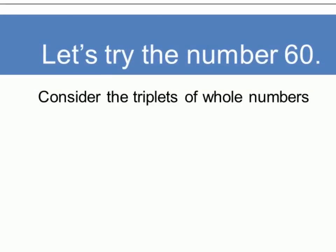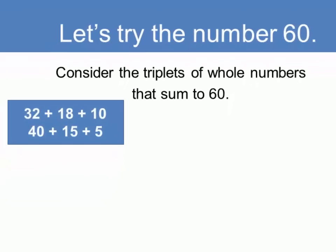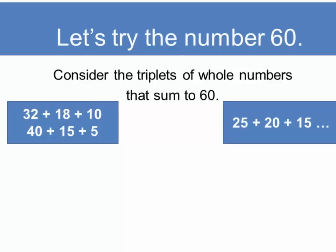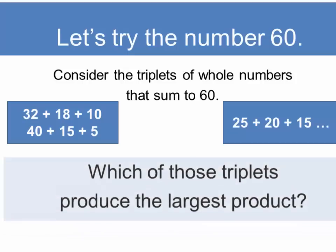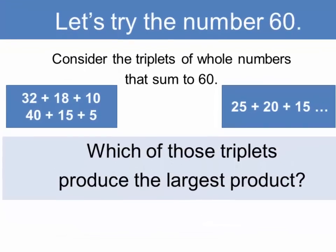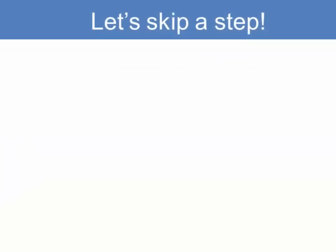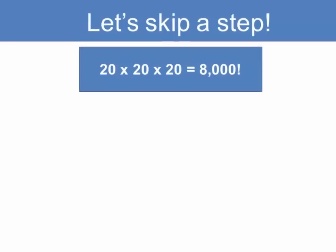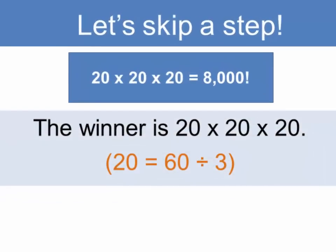Well, let's try the number 60 in something a little different. Let's consider triplets of whole numbers that sum to 60. For example, that might be 32 plus 18 plus 10, or 40 plus 15 plus 5, or 25 plus 20 plus 15. Quite a number of choices, but which of those triplets will produce the largest product when we multiply them? And we can just skip the step of working through the different possible combinations and say that the answer is going to be 20 times 20 times 20, which equals 8,000. You can work this out on paper, but the winner is 20 times 20 times 20, which is simply 60 divided by 3.